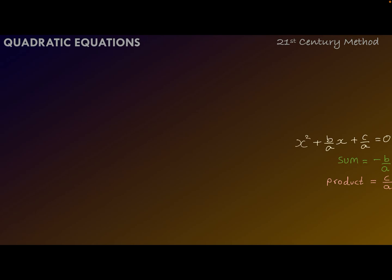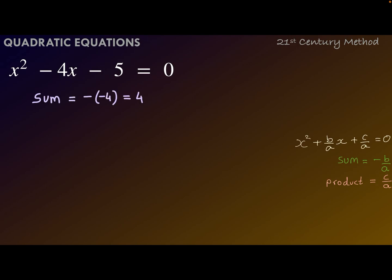Let us say the quadratic equation x² - 4x - 5 = 0 is given. We can see that the coefficient of x² is already 1, so we can write the sum of the roots as the negative coefficient of x, that is 4, and the product of the roots is the constant term, that is -5. Let's say alpha and beta are the roots of the given equation.